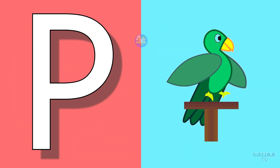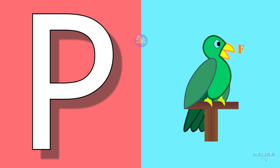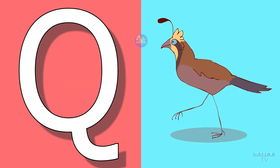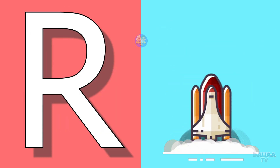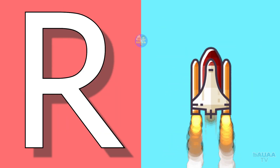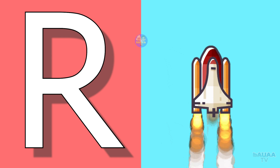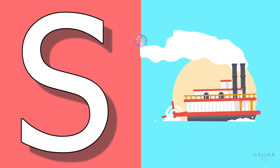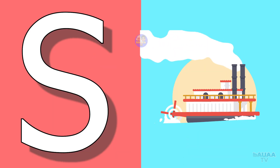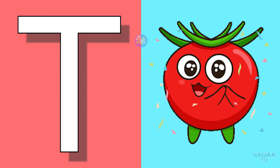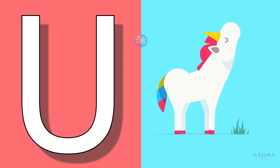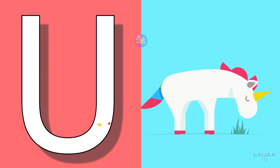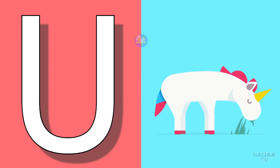P for parrot, Q for quill, R for rocket, S for sheep, T for tomato, U for unicorn.